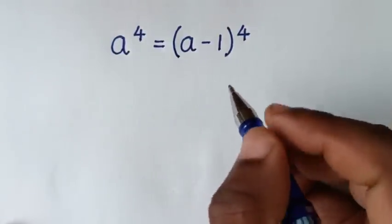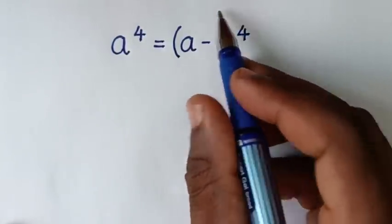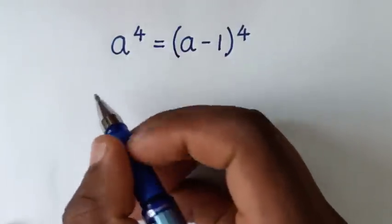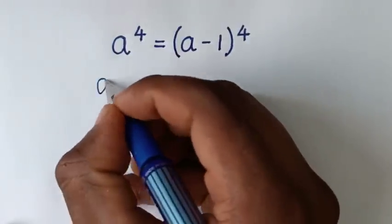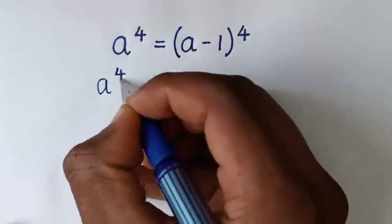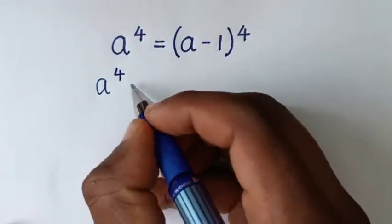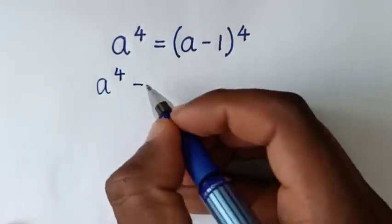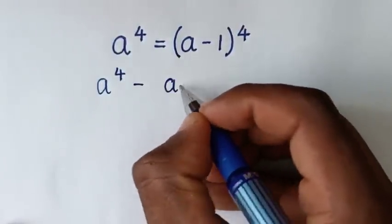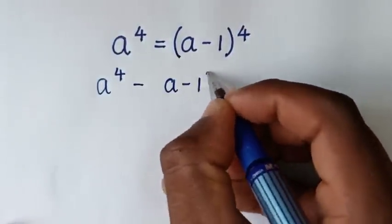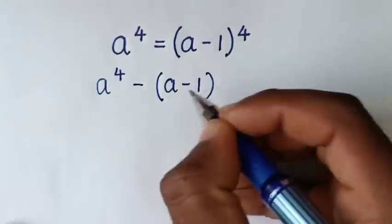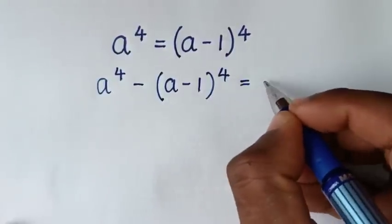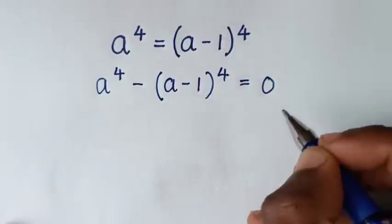In the first step, we'll take the right-hand side to the left side. So it will be a to the power of 4 minus (a minus 1) to the power of 4, which is equal to 0.